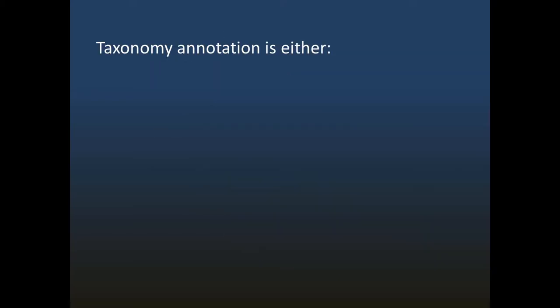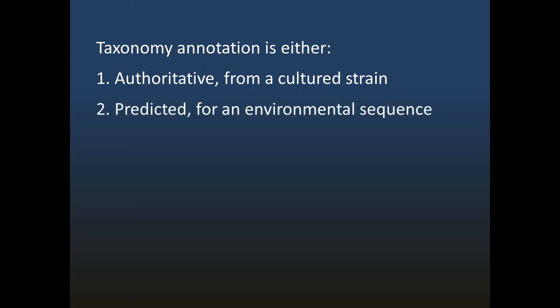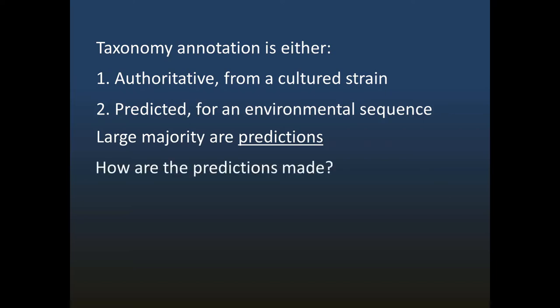With this background, it's now clear that taxonomy annotations can be divided into two main types. If the sequence came from a cultured strain, then we know the phenotype and the taxonomy is authoritative. Otherwise, the sequence came from an environmental sample and there's no information about the phenotype. In this case, the taxonomy must be predicted. Since only a small fraction of microbial species have been cultured and named, a large majority of taxonomy annotations must be predictions, and many of these must be for genera which have not been named. Such sequences may be quite diverged from known strains, making predictions difficult. This raises some questions. How are the taxonomy predictions made, and how accurate are they?